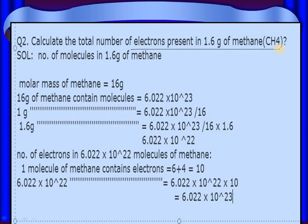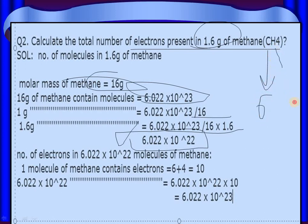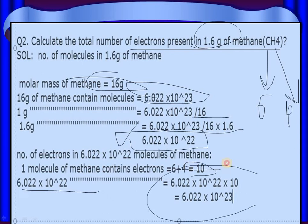To find the number of electrons, first find the number of molecules. The molar mass of methane (CH₄) is: carbon = 12, hydrogen = 4, so 12 + 4 = 16 grams. In 16 grams of methane there is 1 mole of molecules. For 1.6 grams: multiply (1/16) × 1.6, giving 6.022 × 10²² molecules present in 1.6 grams of methane.